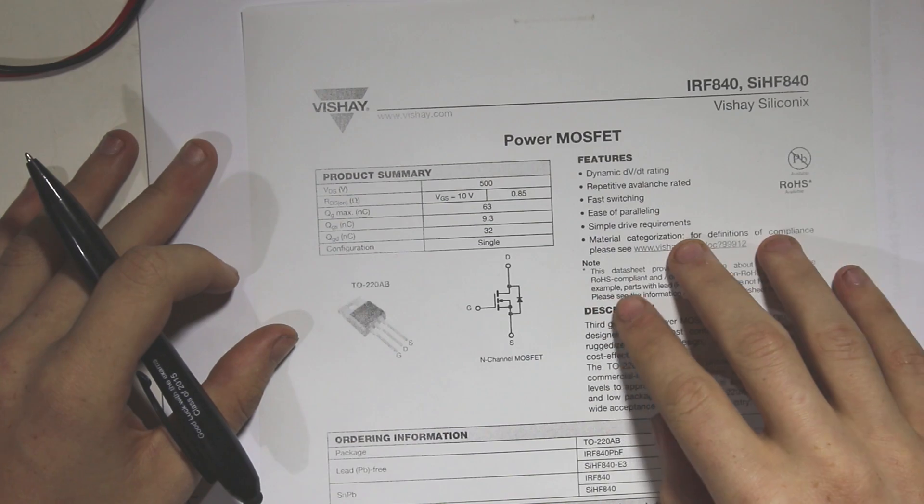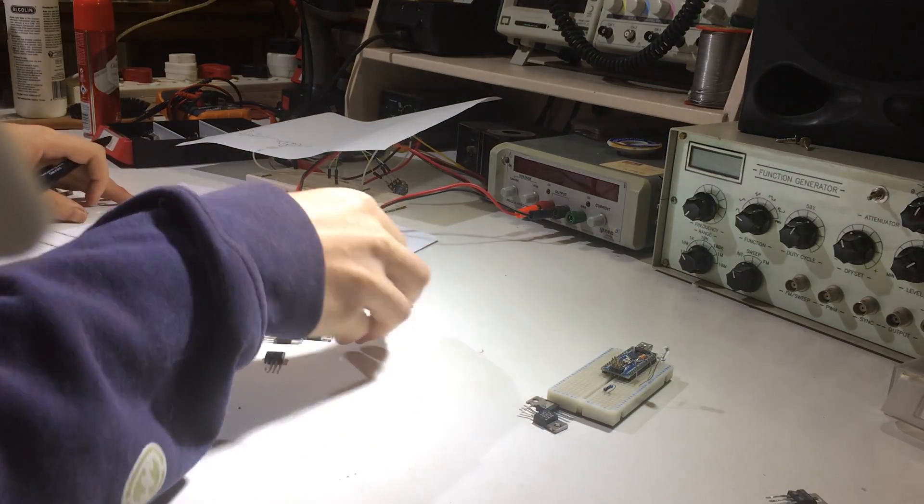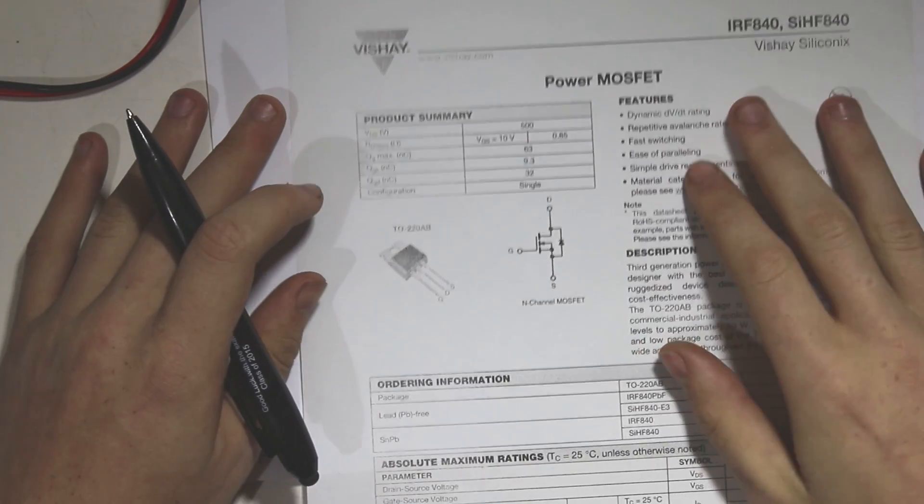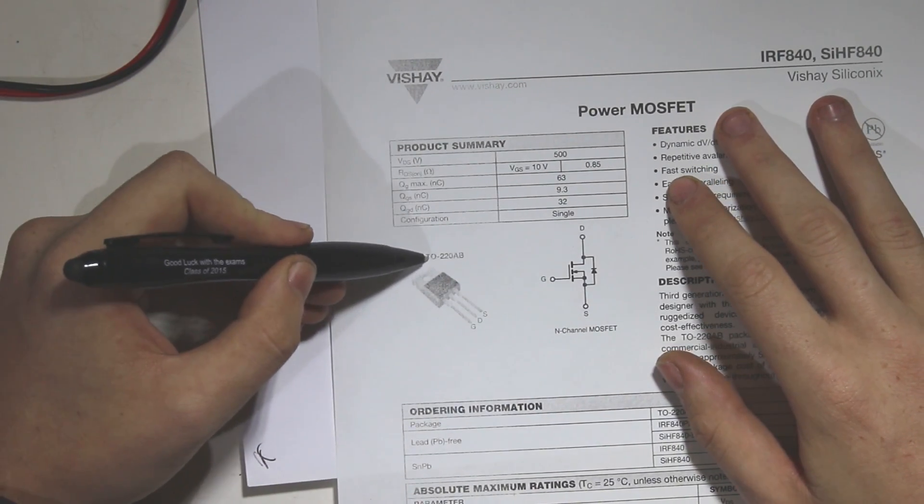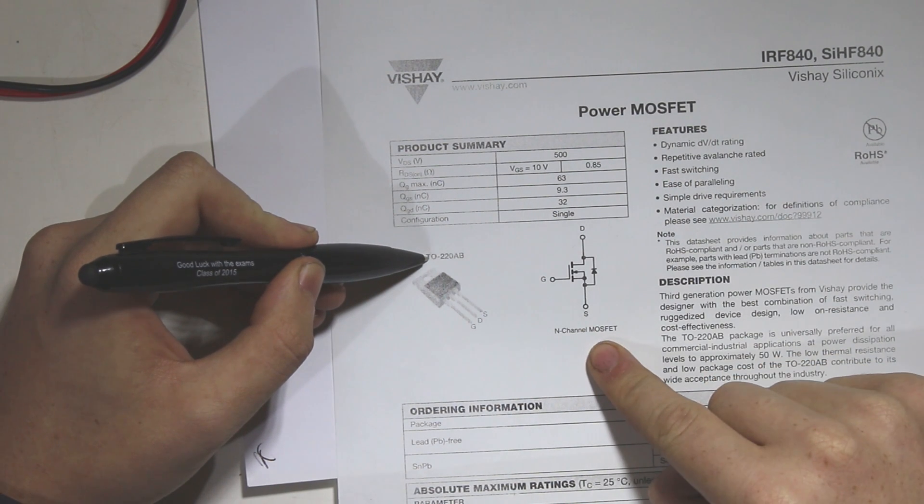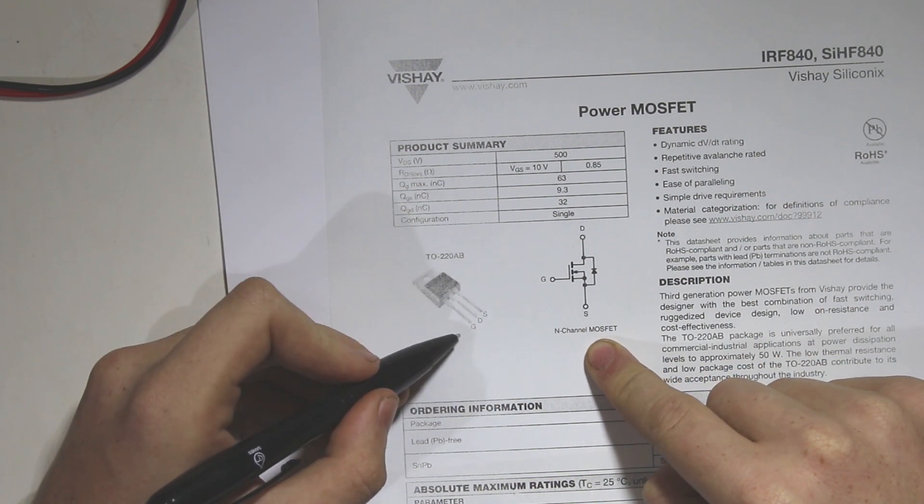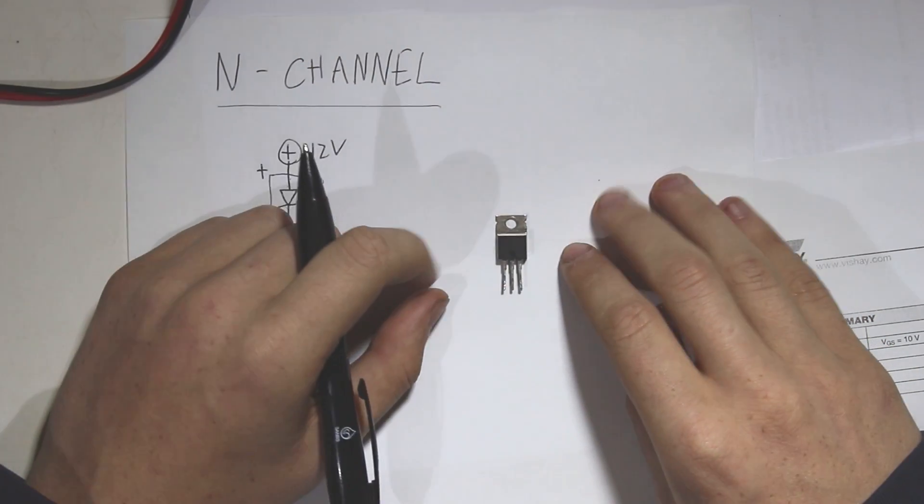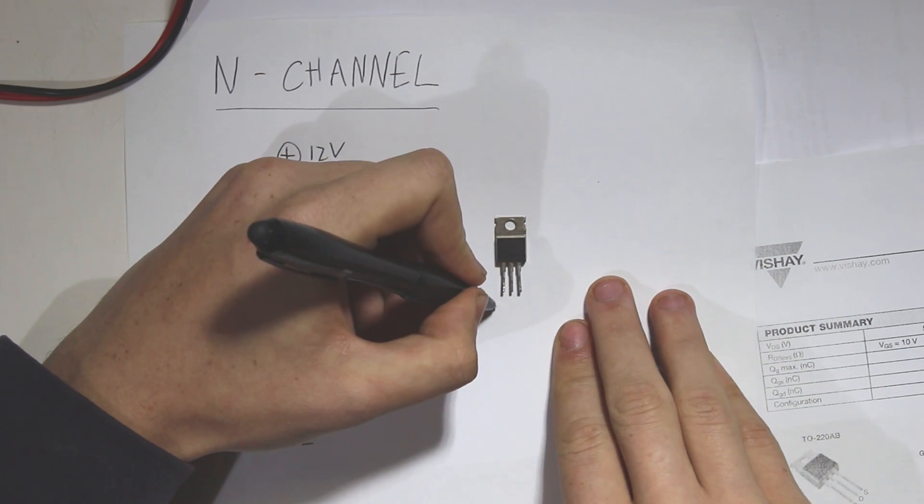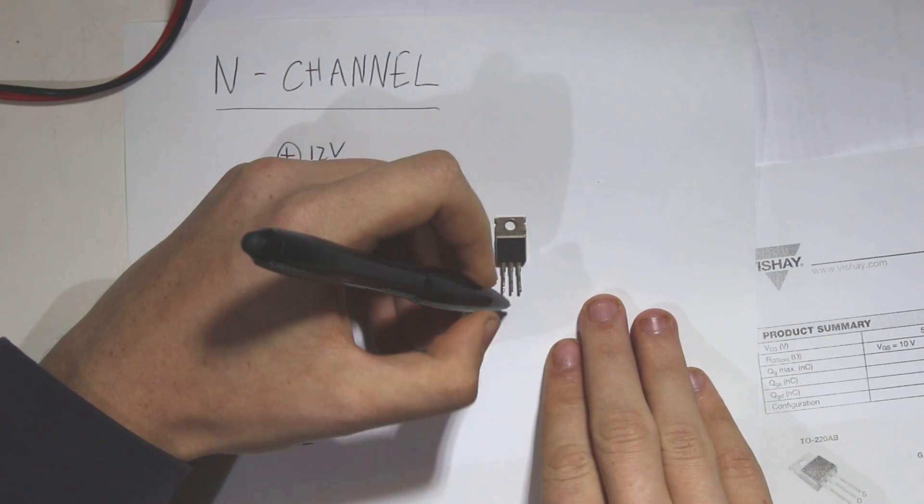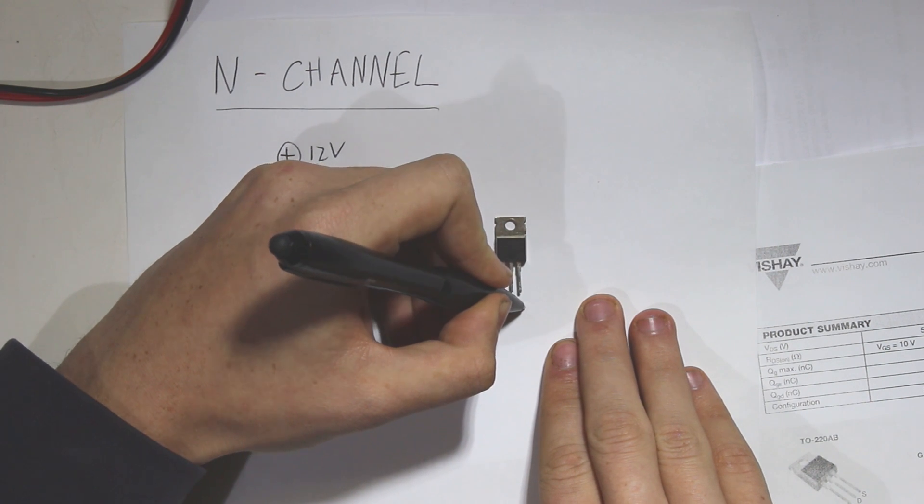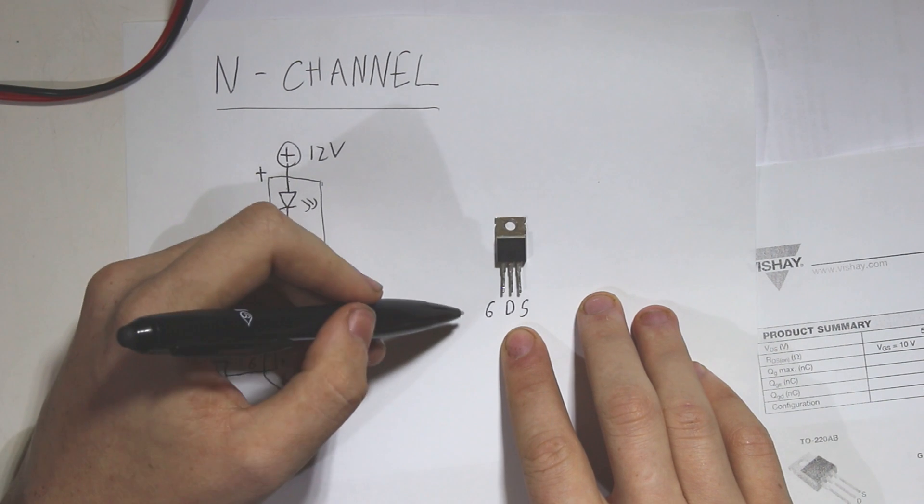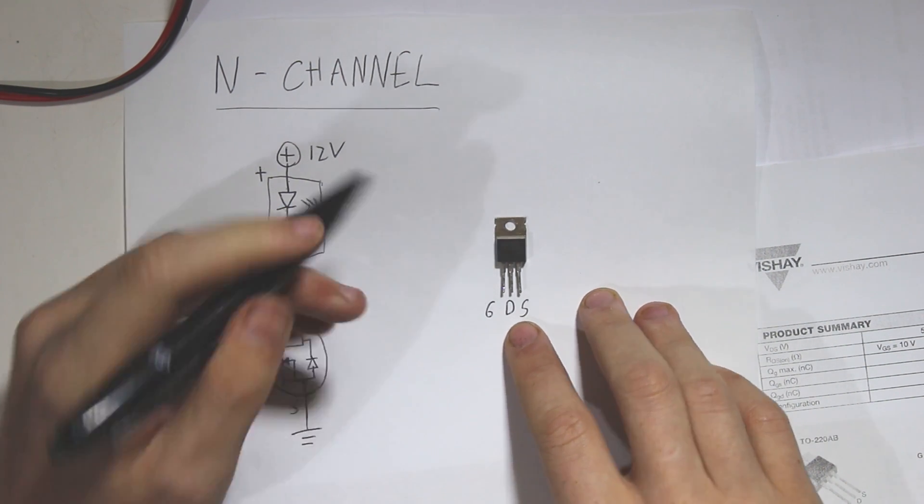Now this is just a datasheet for one of the many transistors that I have lying around here. And this one is in a TO220 package. Now the only thing that's really important is to know which pin does what. We have the transistor here. This leftmost one is the gate, the center one is the drain, and the rightmost pin is the source. And that is pretty much it.